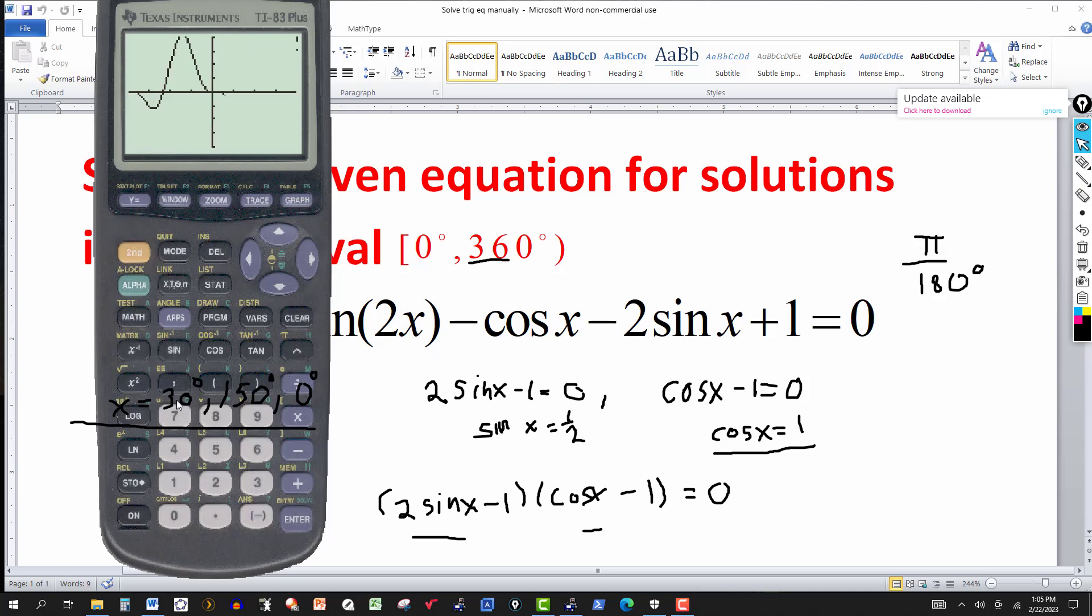And you can see anywhere that the graph crosses the x axis, it's going to be a solution. But we're only concerned from the point zero, zero, onto the right, up to less than 360.